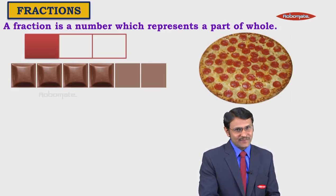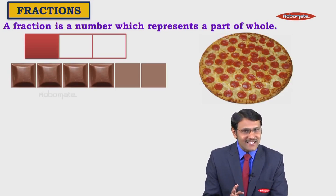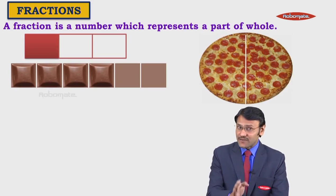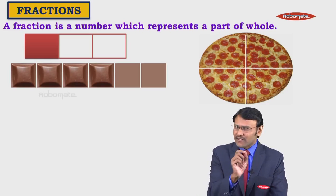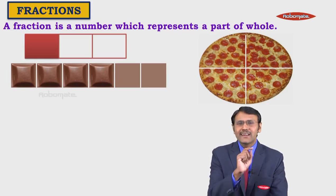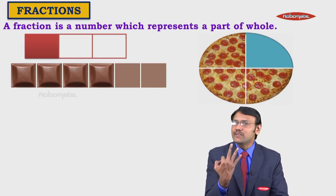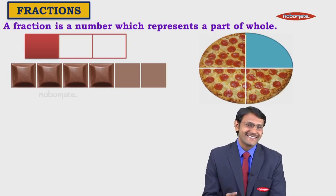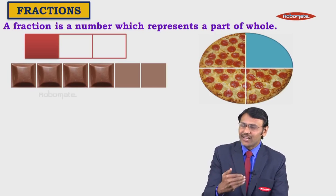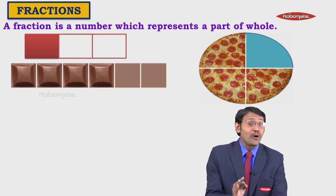Let us take one more example. This is a circular pizza, which is divided into four equal parts. Now we have one part — if we remove it, the remaining will be three parts out of four. So here we can think of the fraction 3 upon 4.